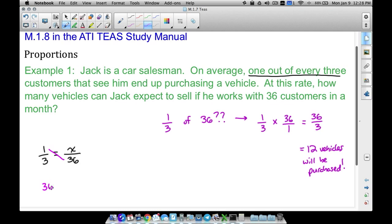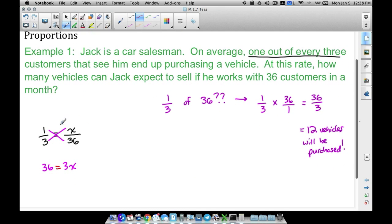And later on in this series of videos, we will talk more about solving equations, but this is how you can solve a proportion. You cross multiply both ways, and you set these two cross products that you get, you set them equal to each other. Now we're trying to figure out 3 times what gives us 36.